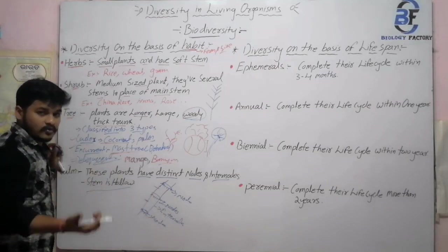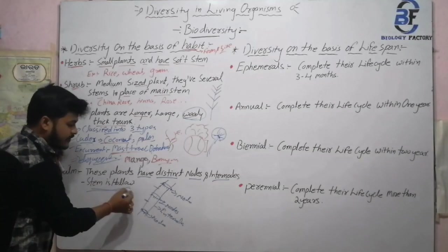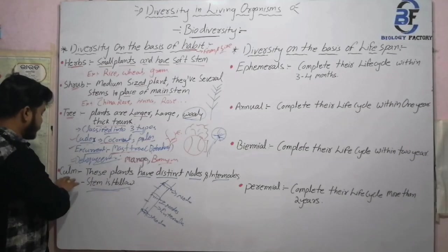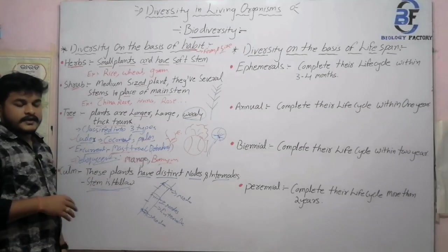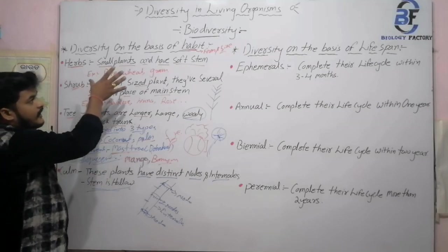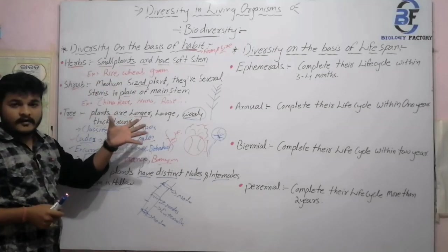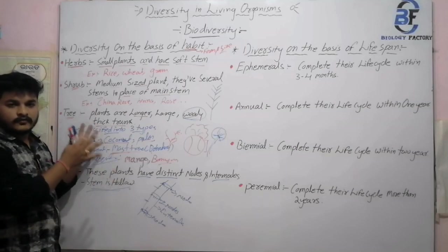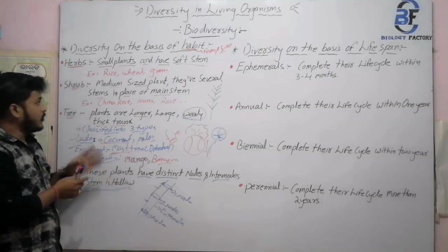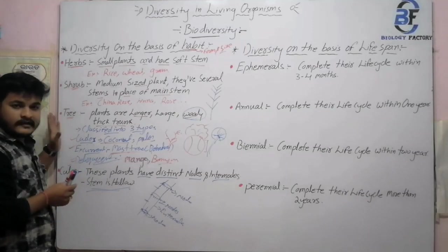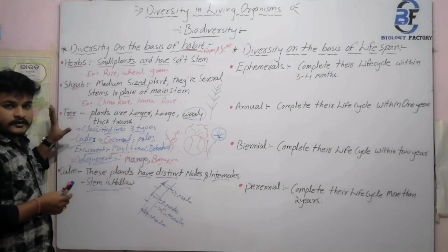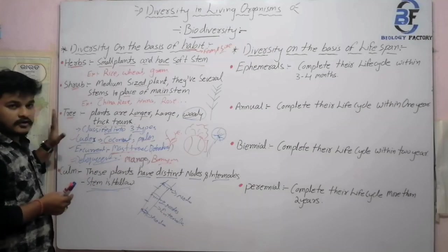The interesting feature of culm is that the stem is hollow in nature — this is the basic difference of culm compared to other plant types. So in habit, we talk about the form and size of the plant. According to form and size, plants are divided into four types: herb, shrub, tree, and culm. Hope this part is understood by all of you.